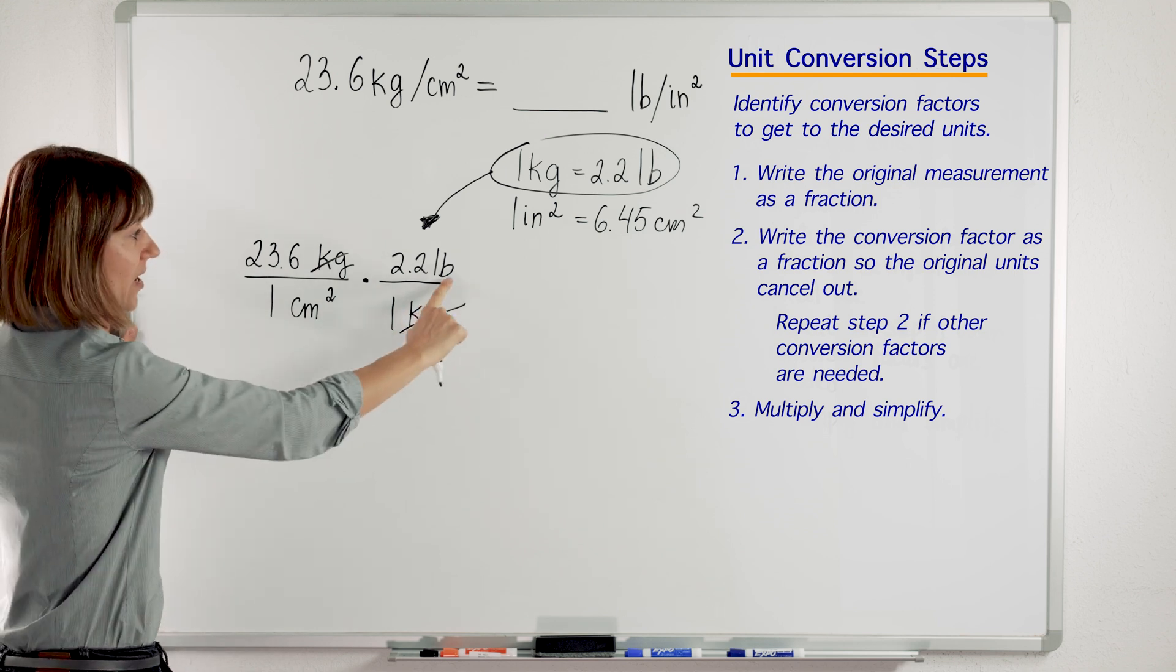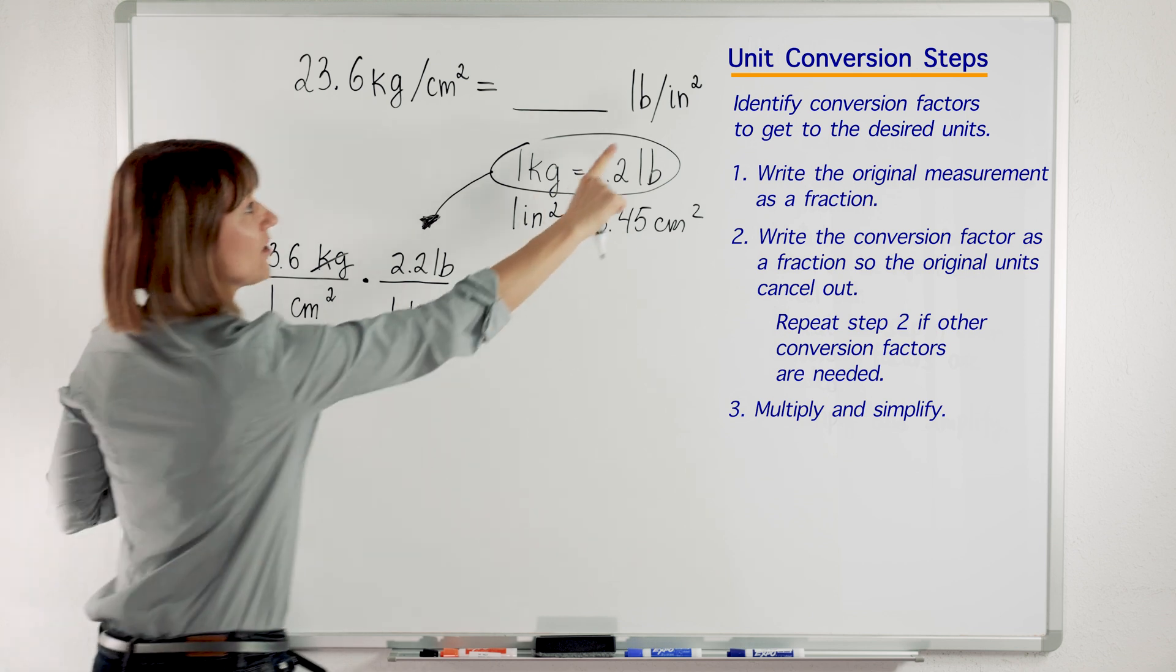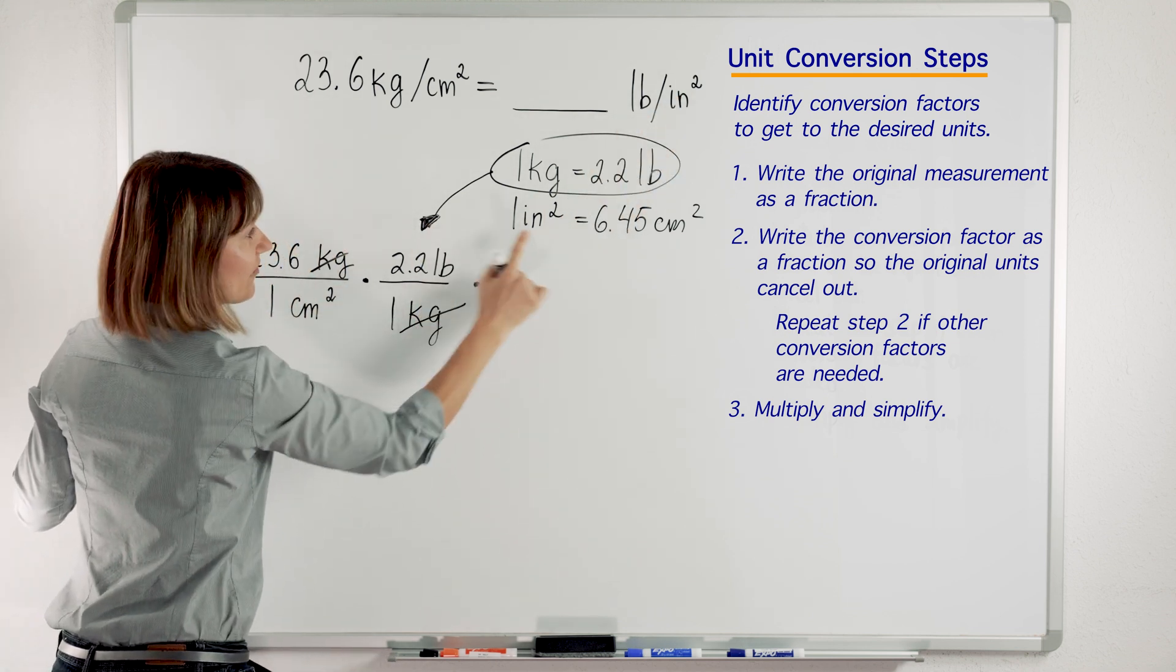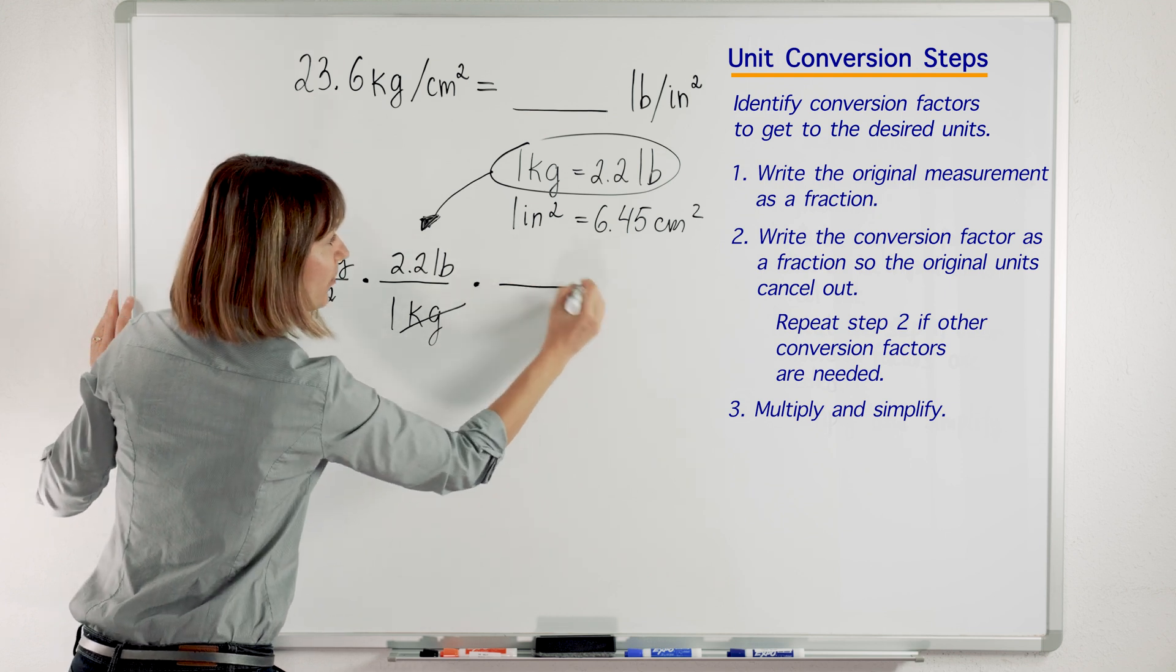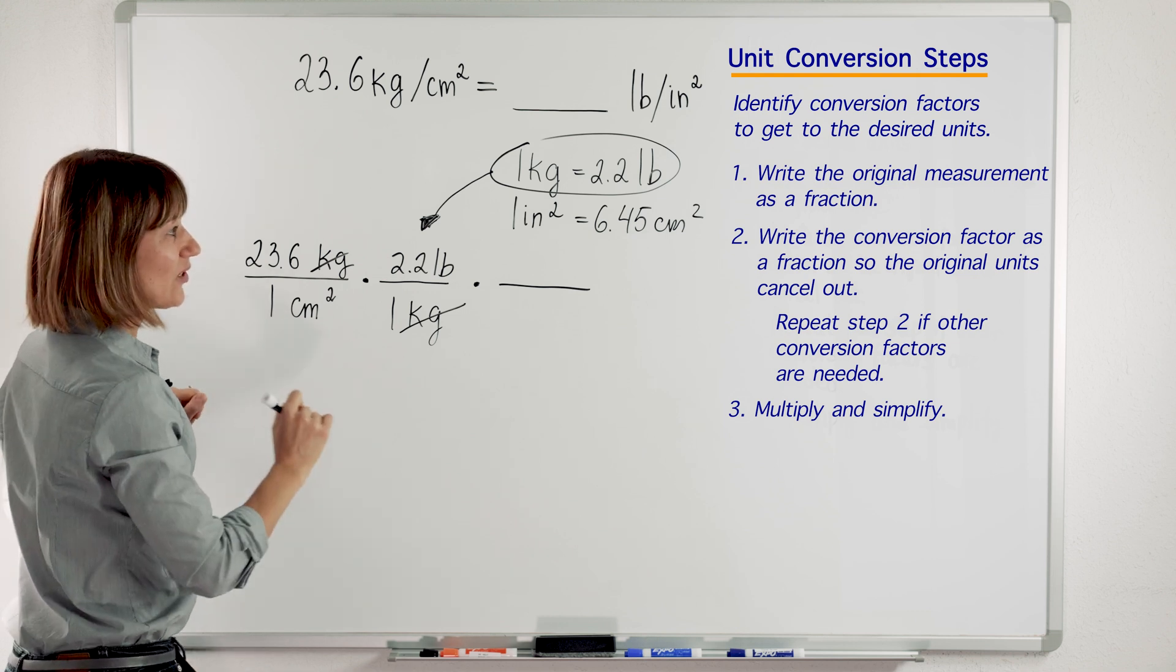Look what we are left with: pounds per one square centimeter. Where do we want to go? Per inch squared. So we will get another conversion factor, this one, and we will plug it in in such a way to get rid of square centimeters.